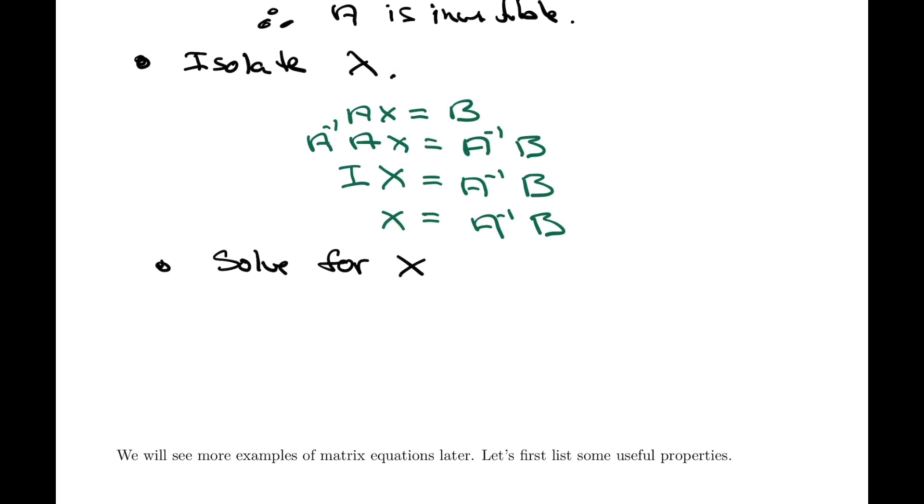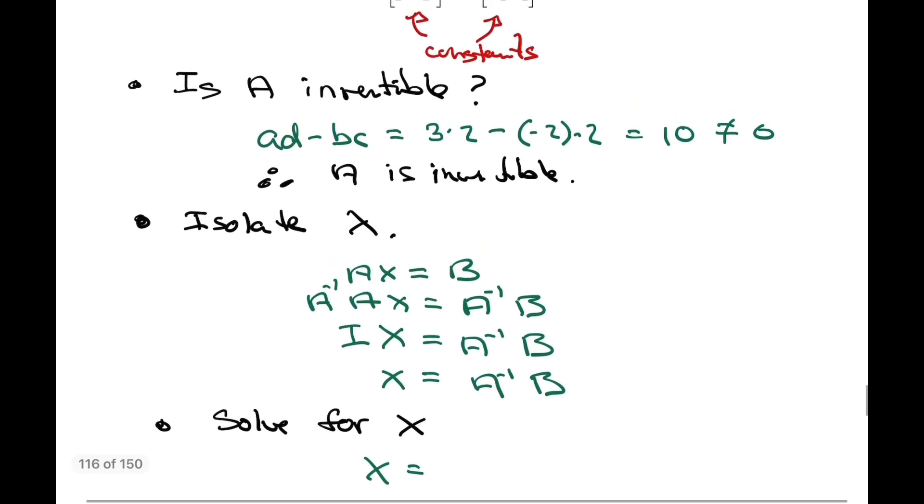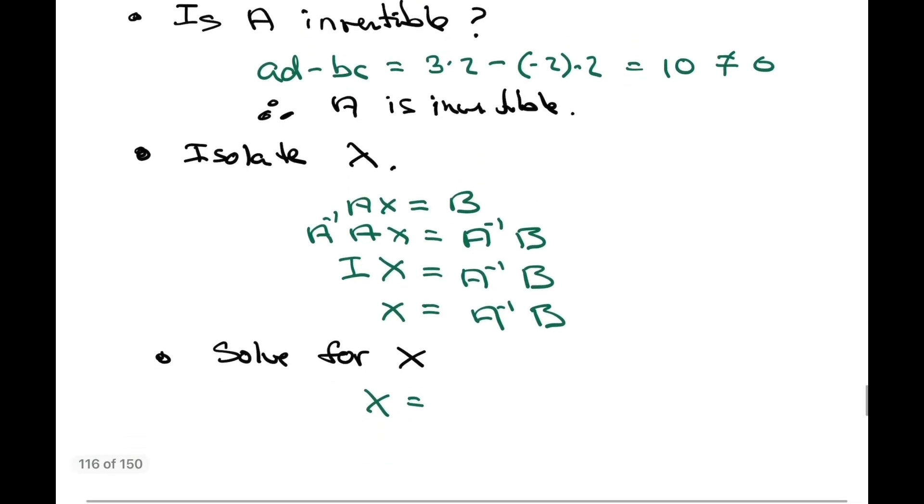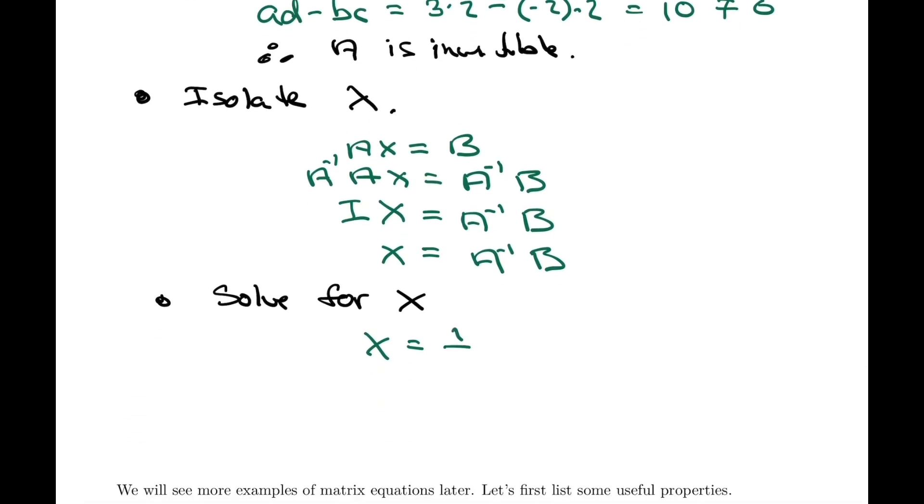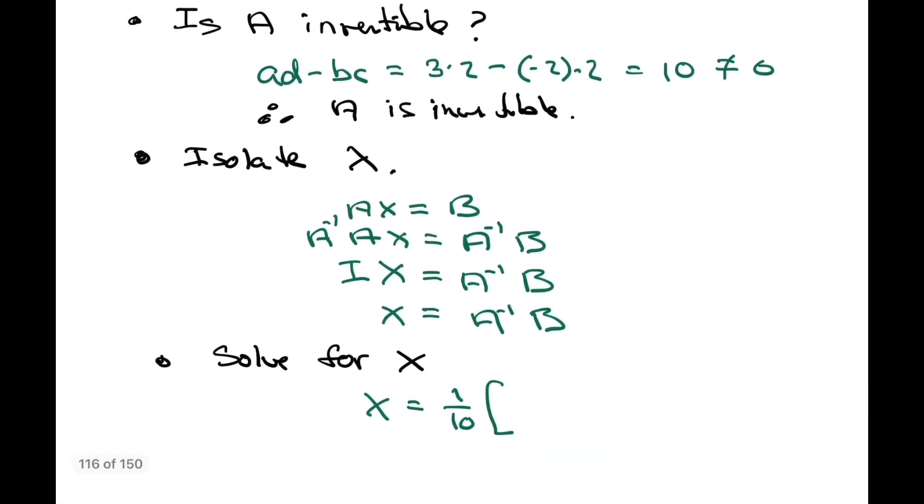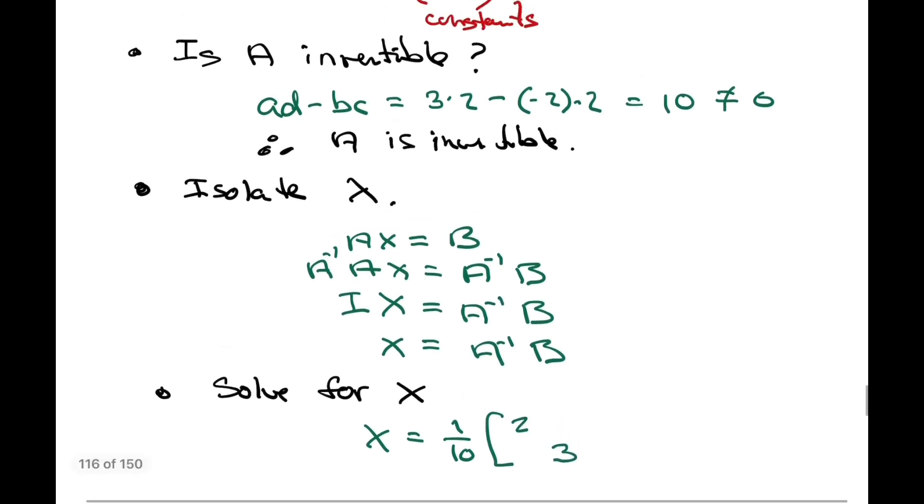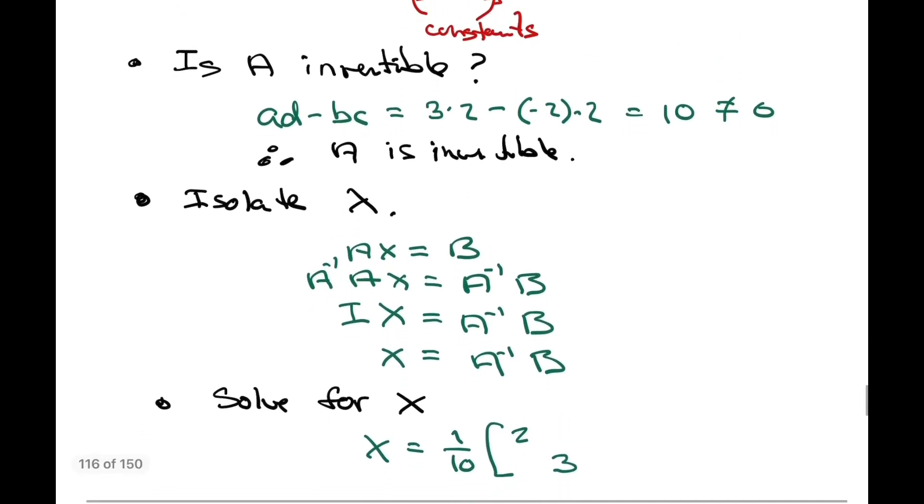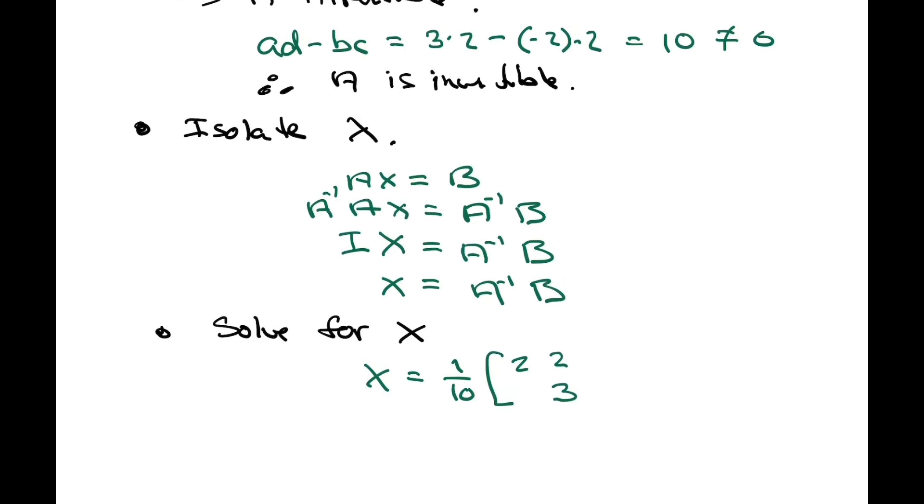We found ad minus bc was 10, so we have 1 over 10 times the matrix where we interchange positions a and d—so 2 and 3 here—and we keep b and c where they are but they change signs, so 2 minus 2. That's A inverse.